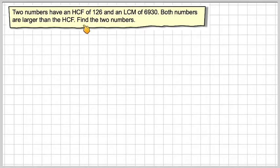We've got two numbers that have an HCF of 126 and an LCM of 6930. The HCF is the highest common factor—the highest number that will go into these two numbers—and the LCM is the lowest number which both these numbers will go into. Both numbers are larger than the HCF, find the two numbers.